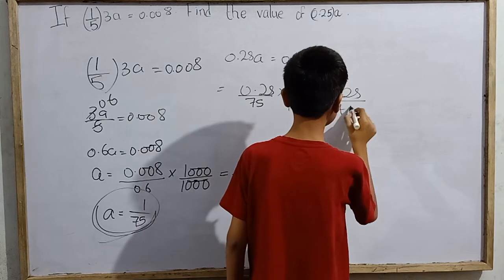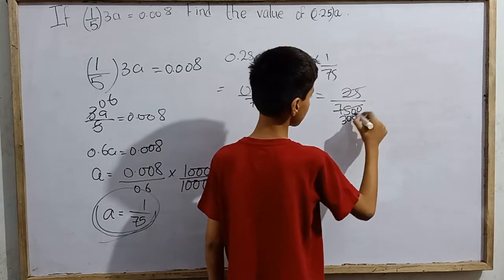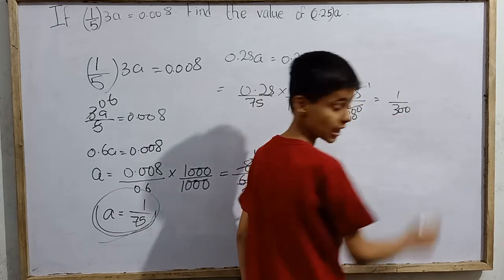This is 25 over 7,500. 300 times and one times, this is 1 over 300.